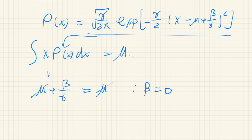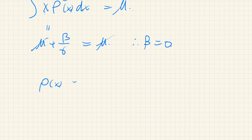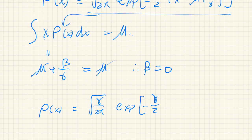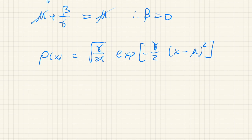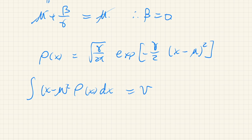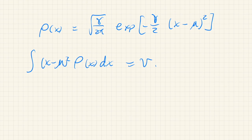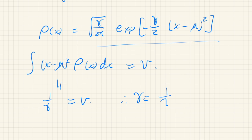With β = 0, the density simplifies to ρ(x) = √(γ/(2π)) · exp[−(γ/2)(x−μ)²]. Applying the third constraint — integral of (x−μ)²·ρ(x) dx = V — this Gaussian integral yields 1/γ = V, so γ = 1/V.